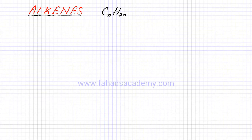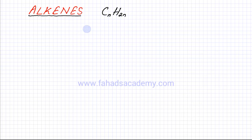The next reactions we're going to study are related to alkenes. Before we discuss the reactions, let's give a background of what alkenes are. We've already discussed this in detail in previous video lectures when we were studying homologous series. Alkenes have a general formula of CnH2n, which basically means that the number of hydrogen atoms are twice the number of carbon atoms present in an alkene.